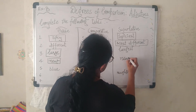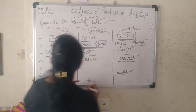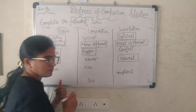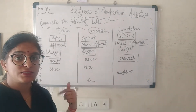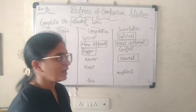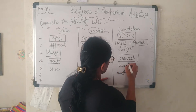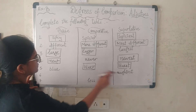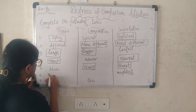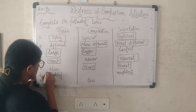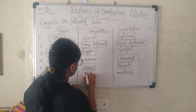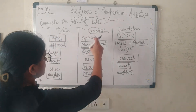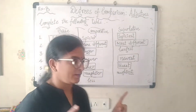The next adjective is 'blue'. Its last letter is 'e', so just add 'r' to get 'bluer' and 'st' for the superlative 'bluest'. Then 'naughtiest' is given in the superlative column; since it ends in '-iest', the base form is 'naughty' (n-a-u-g-h-t-y), and the comparative is 'naughtier' — written with '-ier' at the end.